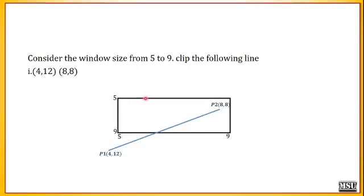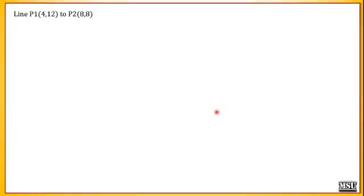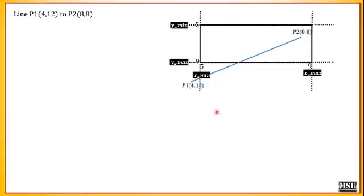Let us discuss an example using the Cohen-Sutherland line clipping algorithm. Consider the window size from 5 to 9 (both x and y). Clip the line from point (4, 12) to point (8, 8). So x_w_minimum = 5, x_w_maximum = 9, y_w_minimum = 5, y_w_maximum = 9. The line is p1 = (4, 12) to p2 = (8, 8). You should draw this diagram to approximately locate p1 and p2 — it helps to visualize. So let us proceed.